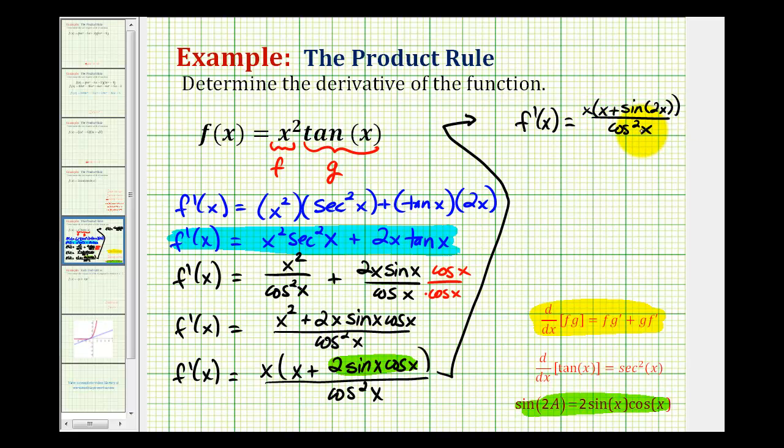If we wanted to eliminate this fraction, we know that one over cosine squared x is equal to secant squared x. So we could write this as f prime of x is equal to x secant squared x times the quantity x plus sine two x.